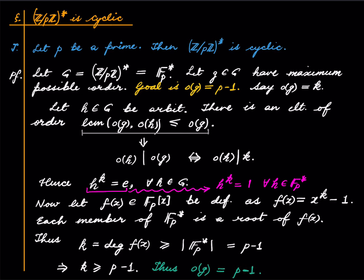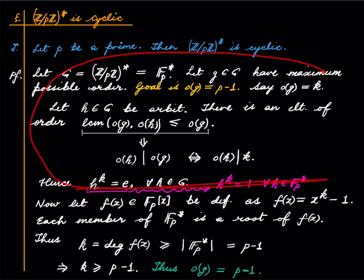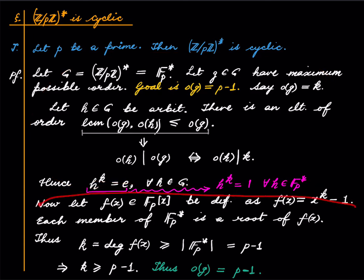The use of polynomials in this part is something I find unsatisfying for such a simple statement. This is the only proof I have found; if you know of a different proof, please let me know. Nevertheless, this is a very important fact that (Z/pZ)* is a cyclic group. Later we will generalize this with an even stronger theorem.